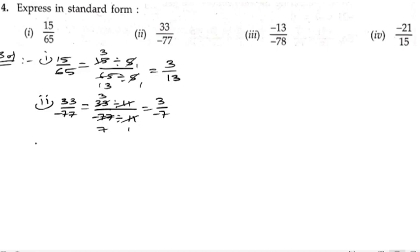Next, third bit: minus 13 by minus 78. Here the common factor is 13. So let us divide it with 13.